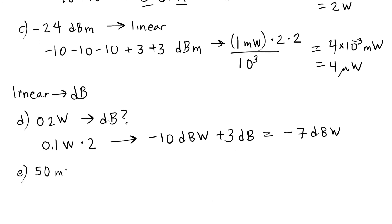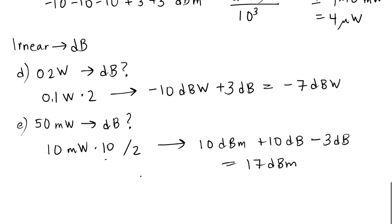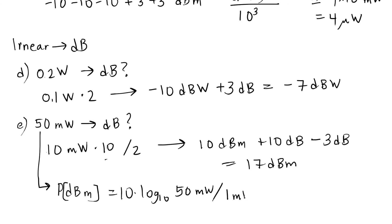Let's convert 50 milliwatts to dBm. 50 milliwatts equals 10 milliwatts times 10 divided by 2. In dB that's 10 dBm plus 10 dB for the multiply-by-10, minus 3 dB for the divide-by-2, giving 17 dBm. Using a calculator: 10 × log₁₀(50 mW / 1 mW) = 16.9897, which is very close to 17 for engineering purposes. The formula and these memorized terms help you convert between linear and dB, and we'll use these dB terms more and more as we describe how to design links.